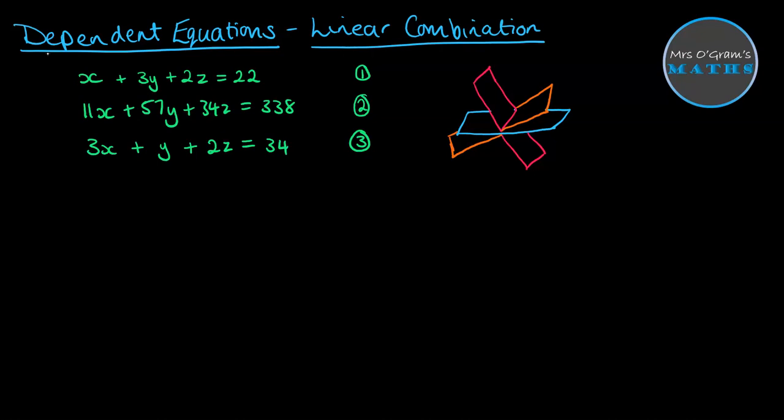Now, when that happens, that's referred to as the equations being dependent. And we can find a linear combination of those equations, which means you can combine two of the equations to make the third one. And you can do it with any two. Any two would be able to make the third one in some way. So we can go one step further and actually work out what that linear combination would be.